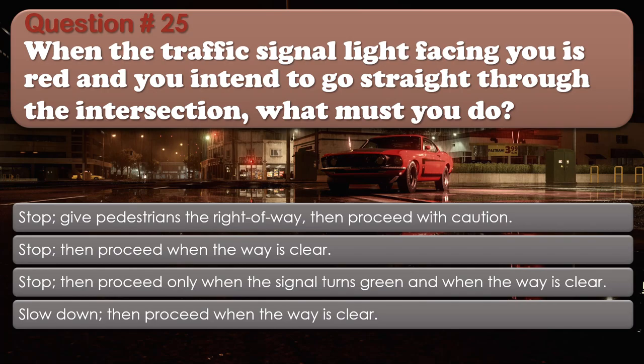Question number 25: When the traffic signal light facing you is red and you intend to go straight through the intersection, what must you do? Stop, give pedestrians the right of way, then proceed with caution. Stop, then proceed when the way is clear. Stop, then proceed only when the signal turns green and when the way is clear. Slow down, then proceed when the way is clear. The correct answer is Stop, then proceed only when the signal turns green and when the way is clear.